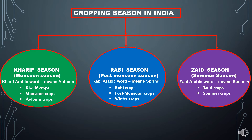The third season is Zaid season, which is also known as the summer season. Zaid is also an Arabic word meaning summer, as the harvesting season coincides with the beginning of summer. The crops grown in Zaid season are known as Zaid crops or summer crops. Now we will discuss in detail about each season and its crops.